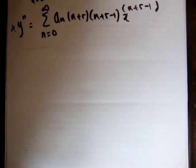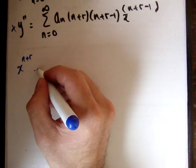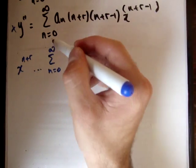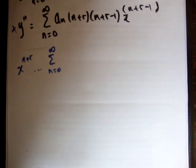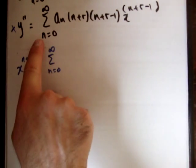And the thing is we want the indices we want is x to the n plus r. And we still want the sum to be from n is equal to 0 to infinity. Alright, so I said before that when you're shifting indices, if you increase the indices here you decrease where it starts.